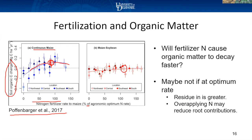If you over-apply nitrogen, your roots don't have to search as far and they might not grow as much. That's some of what they thought they were seeing — if you over-apply nitrogen, you get less organic matter because the roots aren't growing or proliferating as much. Again, this is one study, and every soil and climate would be a little different.